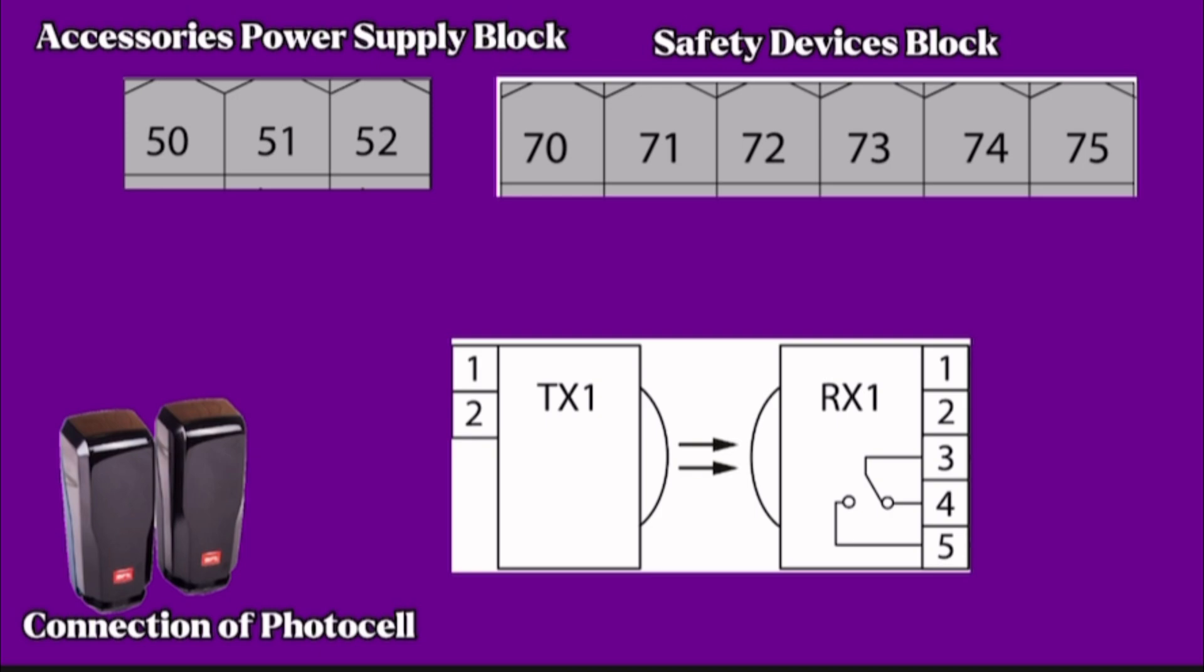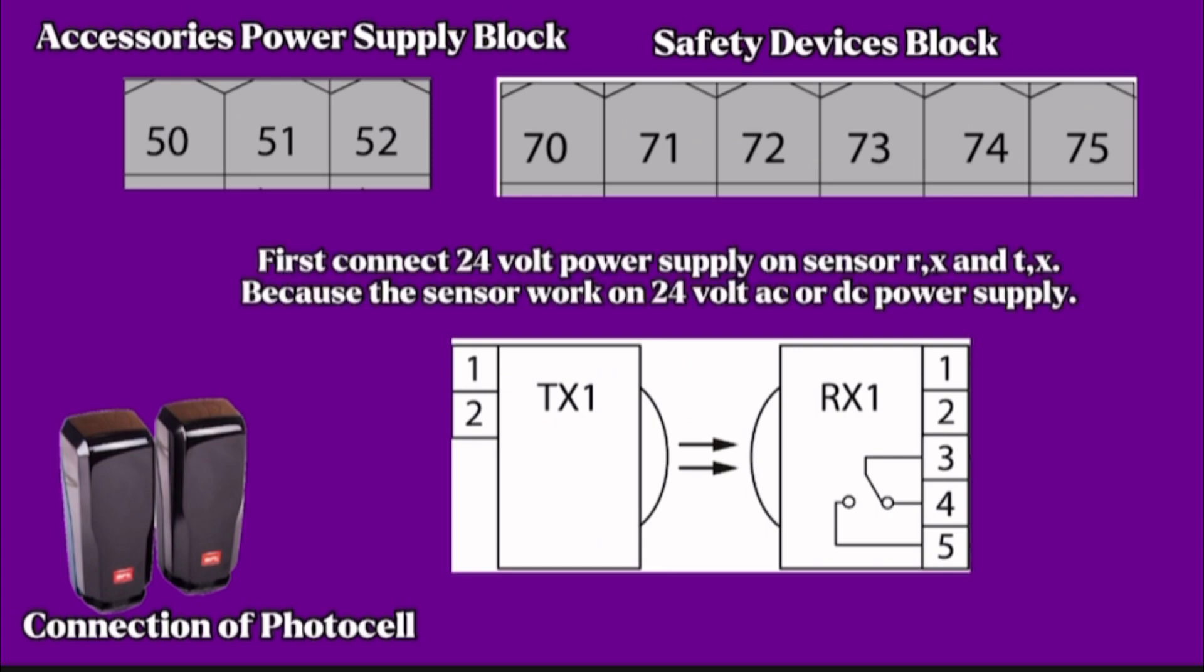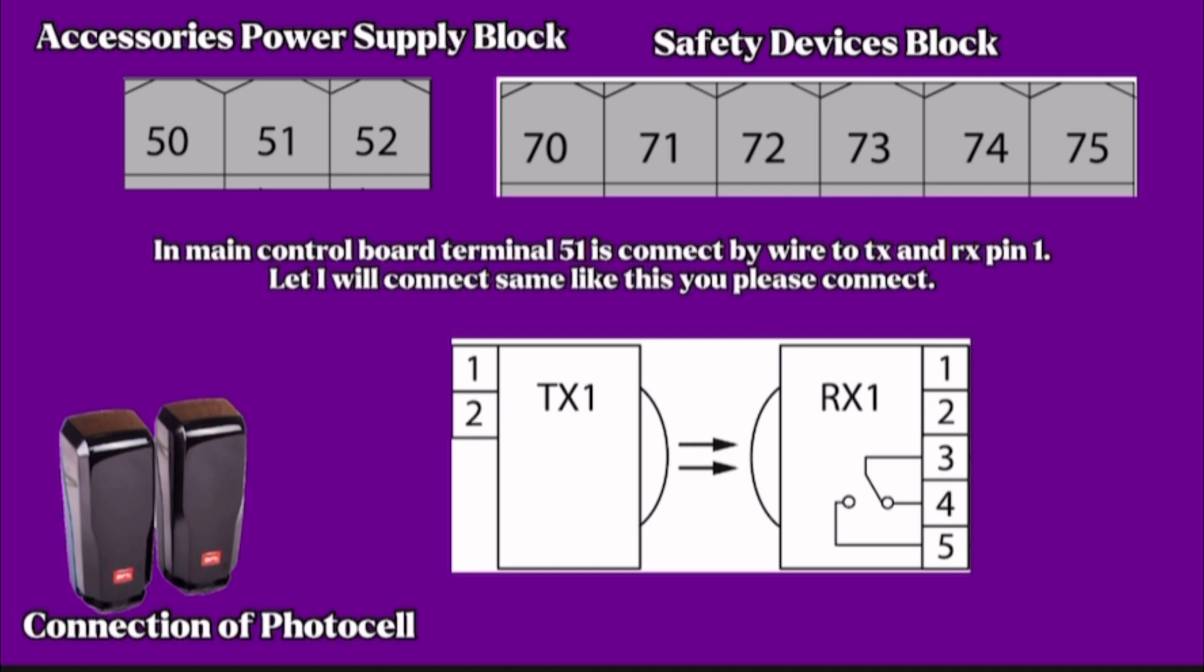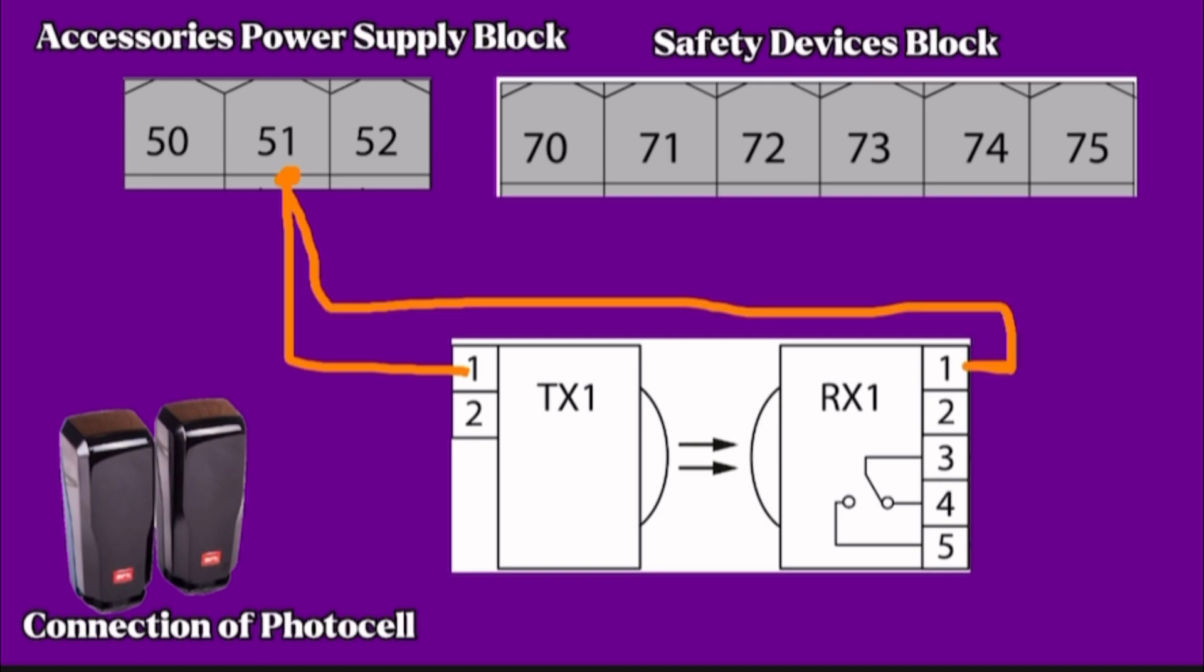This single pair of sensors - one transmitter, one receiver. First connect 24-volt power supply on sensor RX and TX because the sensors work on 24-volt AC or DC power supply. Take power supply for sensors from control board. In main control board, terminal 51 connects by wire to TX and RX pin 1. Pin 51 is output power 24-volt AC.